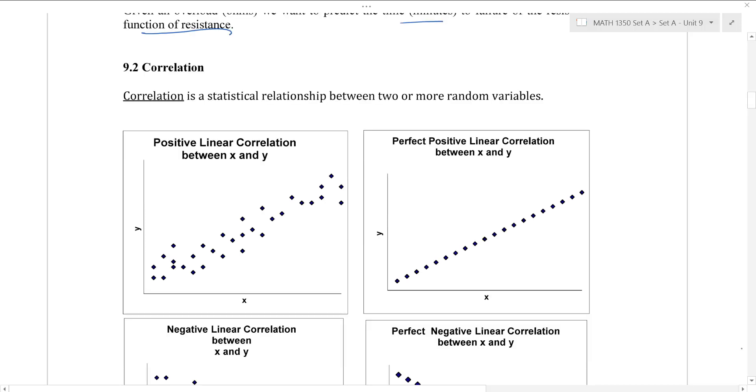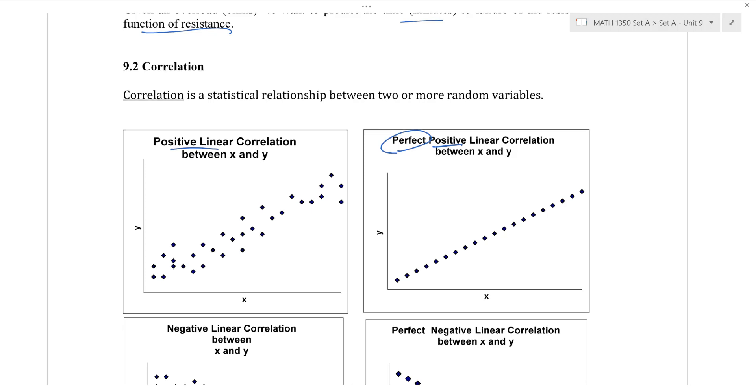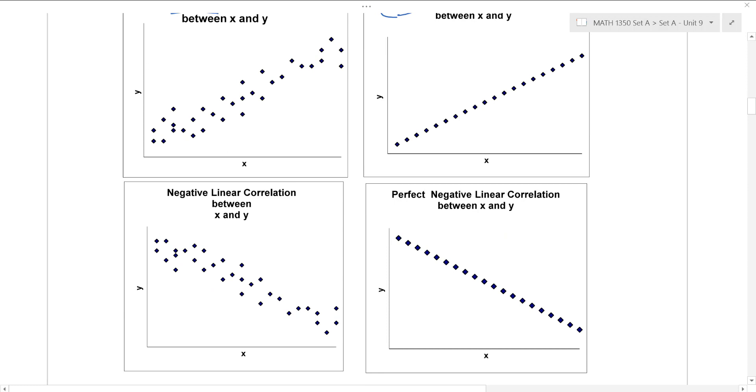So in the first two graphs here we have some positive linear relationships. The second one here is perfect. All of these points fall into a straight line. This is some idealized scenario that we don't really expect to happen in the real world. The first picture here is a little more realistic. There is some noise, there is some scatter, but it seems that as x goes up y is also going up. It's some positive linear relationship. Analogously down below we have a perfect negative linear correlation with this line here and just a regular negative linear relationship here again with some scatter.